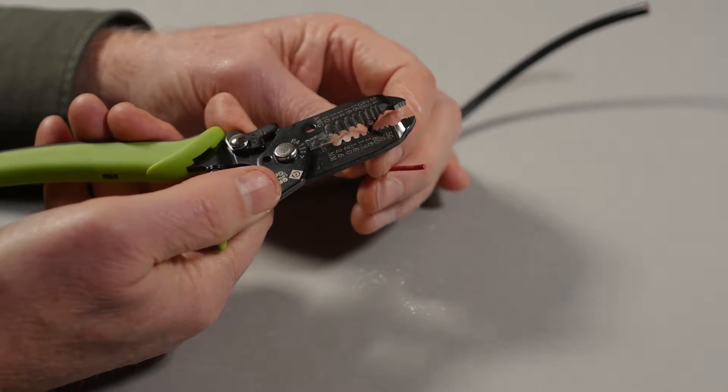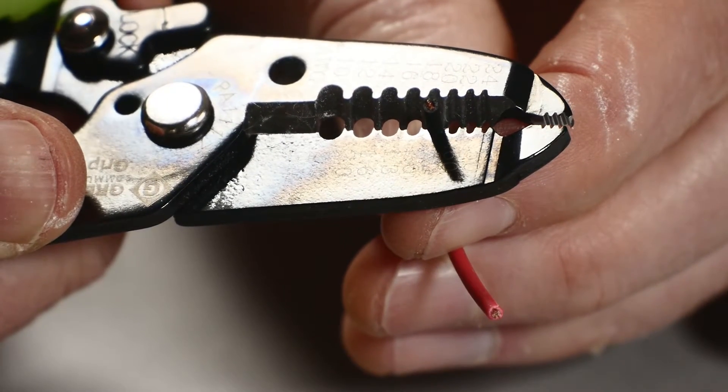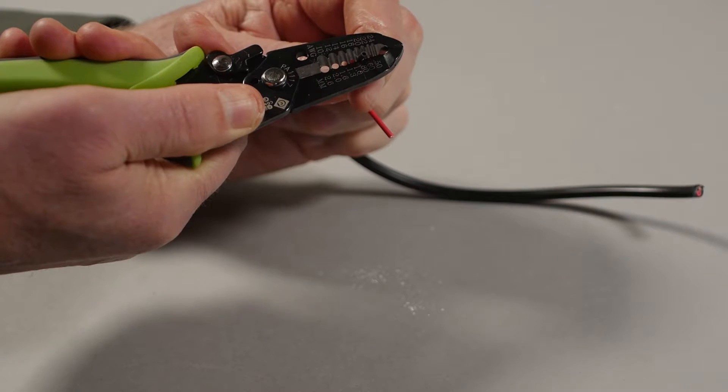Using wire strippers, separate a section of insulation from both conductors without removing it completely.